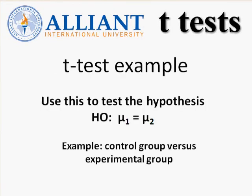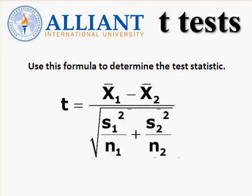Like all t-tests, the null states the same thing — that there is no difference between the means between the groups. Here's the formula for a two-sample t-test.